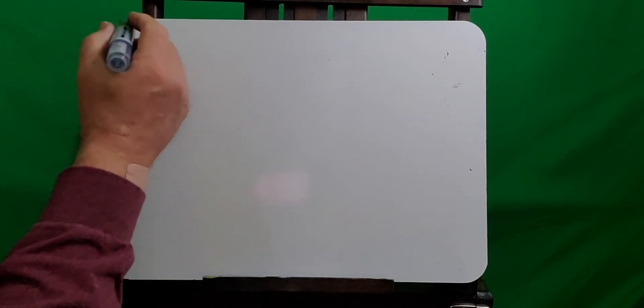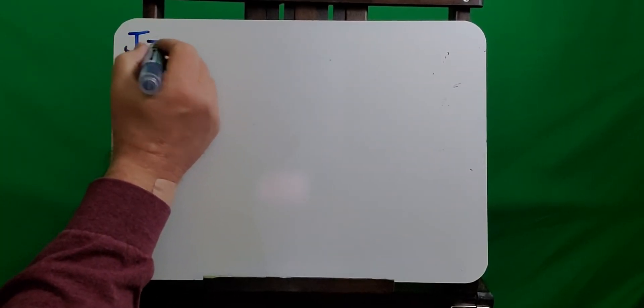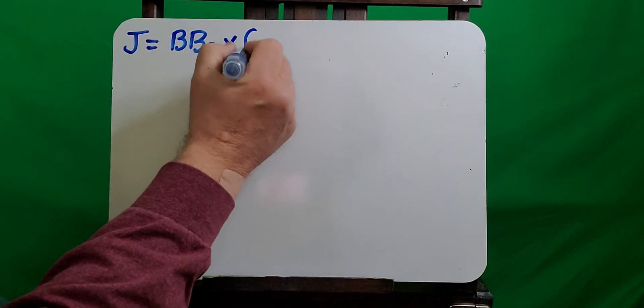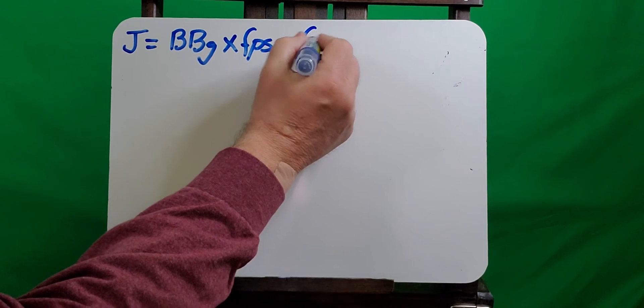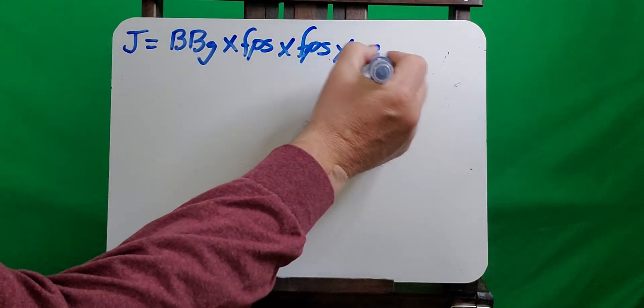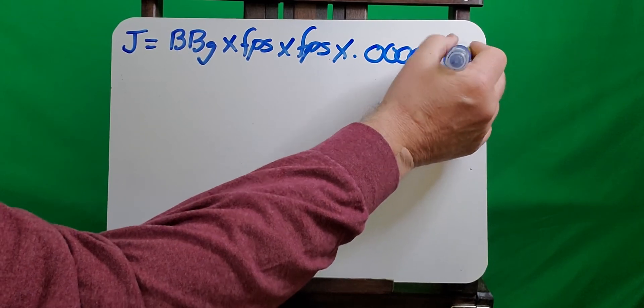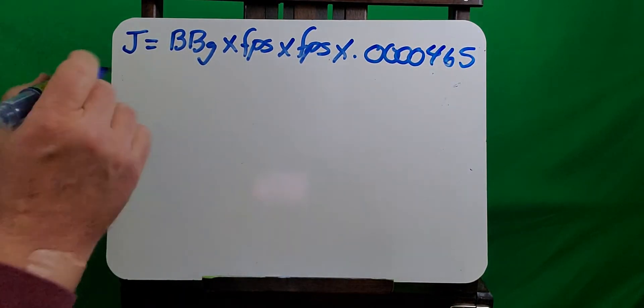So let me show you a formula that only requires one number to remember. It's kind of a complicated number, but you can write it down and put it in your wallet. And how this works is you take the BB weight in grams times feet per second twice, and then you multiply that times the joules number, which is 0.0000465.